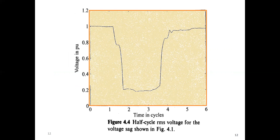To summarize today's session: we have seen how to calculate the voltage sag in terms of RMS voltage using both full cycle and half cycle, and we have seen the characteristics of the voltage waveform behavior for a full cycle. We have also seen the mathematical expressions for both half cycle and full cycle. In the next session, we will be seeing about the fundamental component.